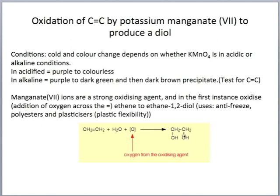A diol is when you have two OH groups attached — so it is an alcohol. The manganate ions are a strong oxidising agent and will oxidise ethene to ethane-1,2-diol. This product has many uses: it is often used as antifreeze, and it is also used in polyesters and plasticisers. Plasticisers add flexibility to plastics.